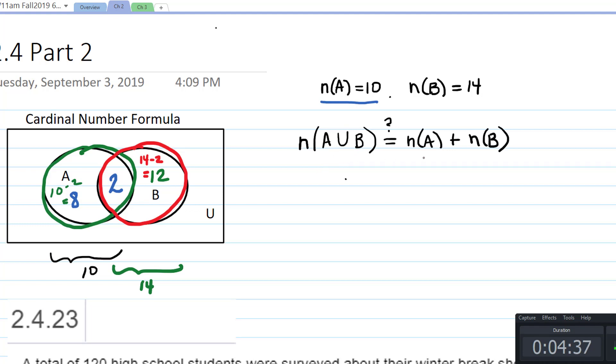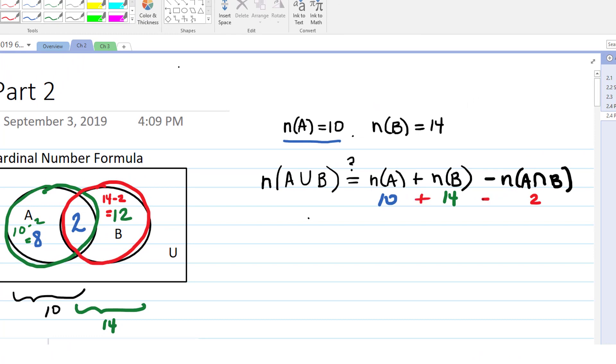It's the number that are in A, which is 10, plus the number that's in B, which is 14. But here we're over-counting by 2. So in order to fix that, in our formula, we subtract off that extra piece, that one that we counted twice, the intersection. So 10 plus 14 minus 2 would actually be 22. So what the cardinal number formula basically reminds us of is that we have to take into consideration the overlap when we're working with cardinalities.